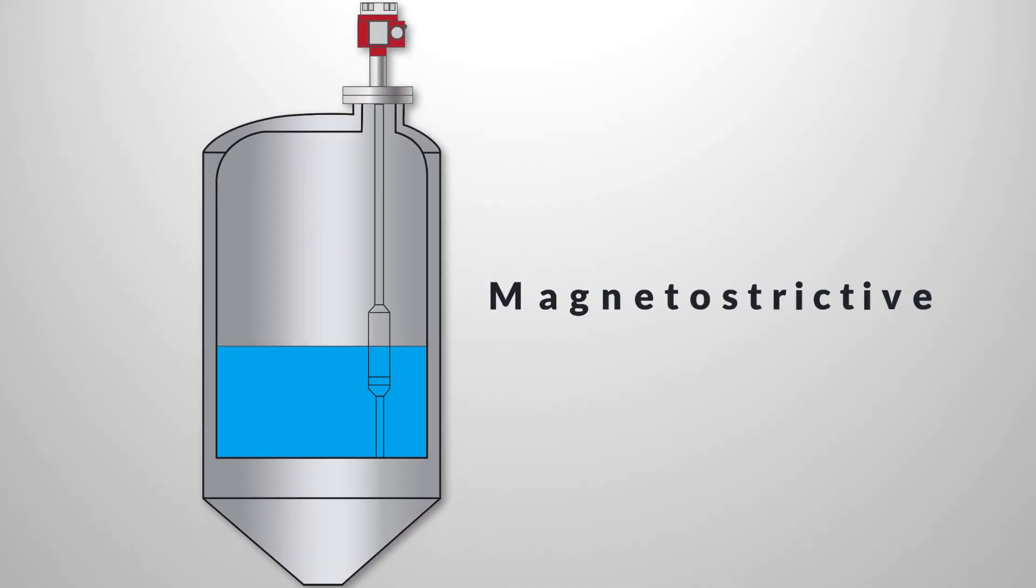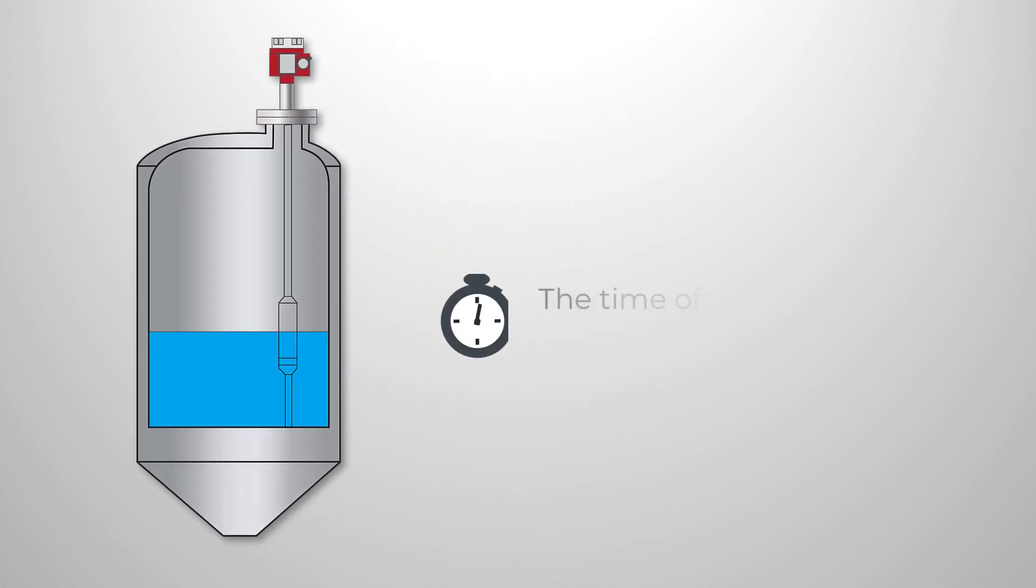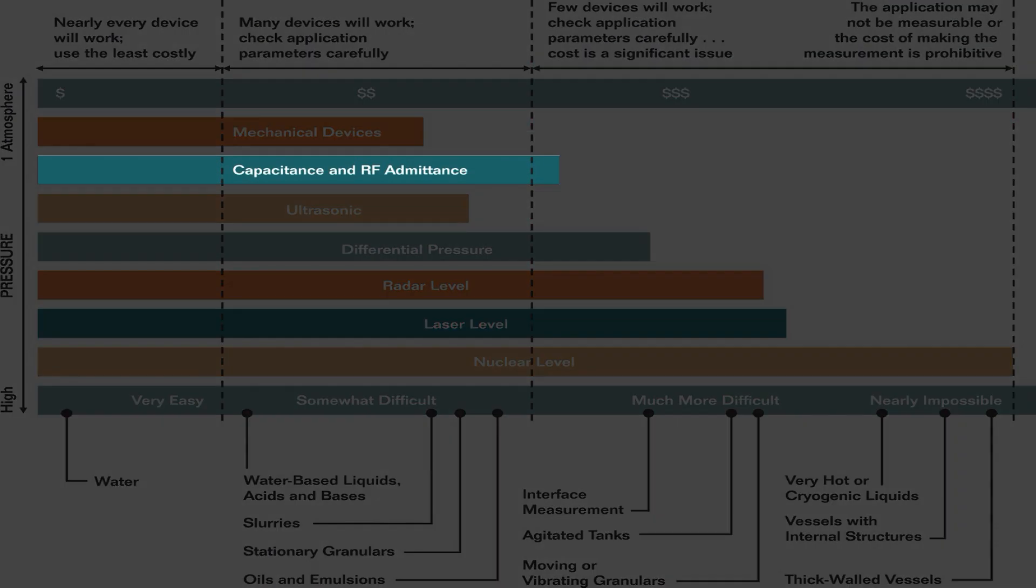Magnetostrictive level gauges use a float containing a permanent magnet that moves freely up and down a magnetostrictive waveguide. A low-current interrogation pulse travels down the waveguide and when it reaches the float, a torsional twist and reflection are created. The time of reflection indicates the float position and level.